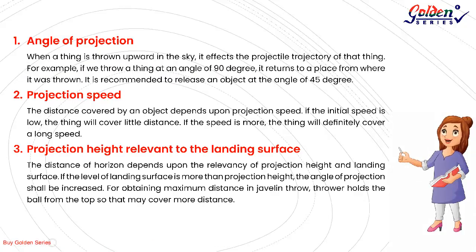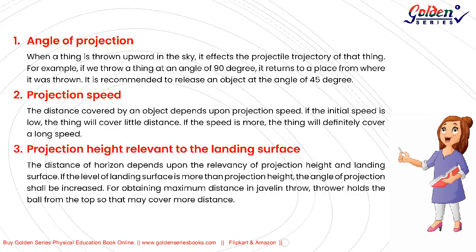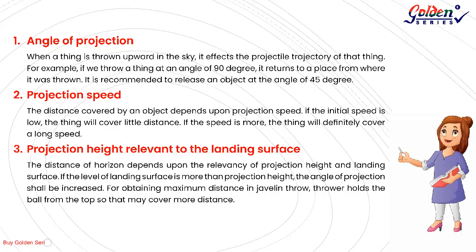1. Angle of Projection. When a thing is thrown upward, the angle affects its projectile trajectory. For example, if a thing is thrown at an angle of 90 degrees, it returns to the place from where it was thrown. It is recommended to release an object at an angle of 45 degrees for maximum distance.